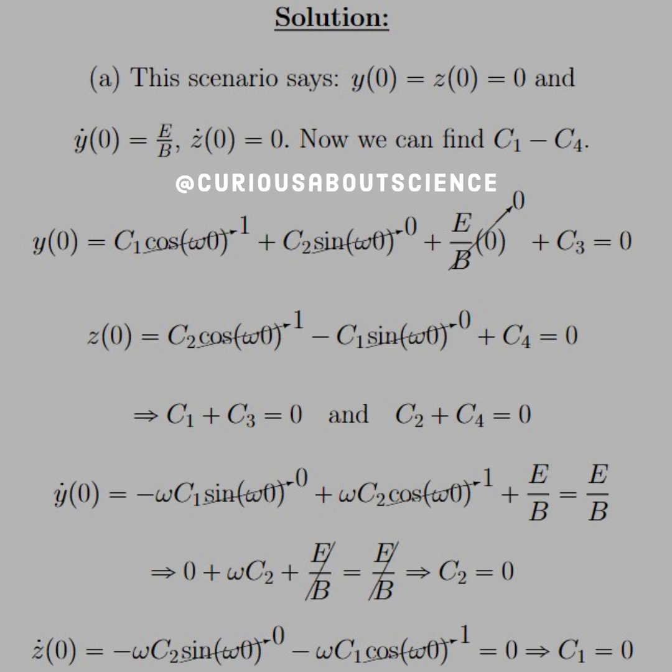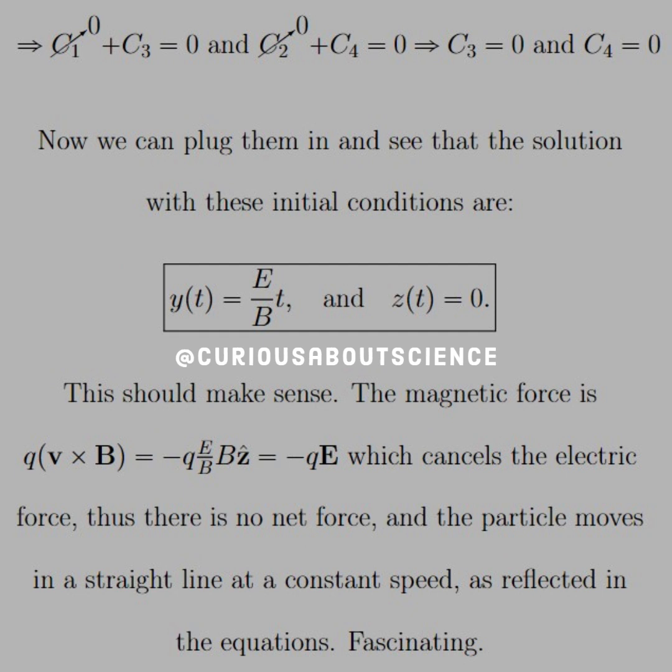Similarly, for the z term, we get that c1 equals 0. Putting those together with the relations we just found from the position equations yields c1 plus c3 equals 0, so c3 equals 0. Similarly, c2 plus c4 equals 0 yields c4 equals 0.